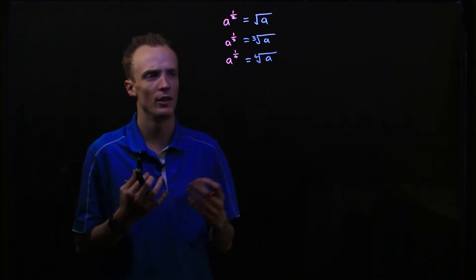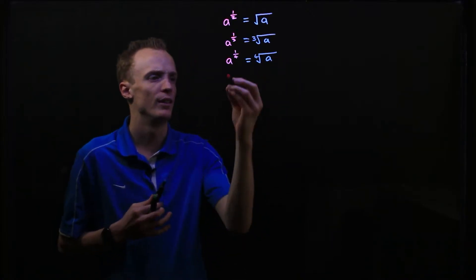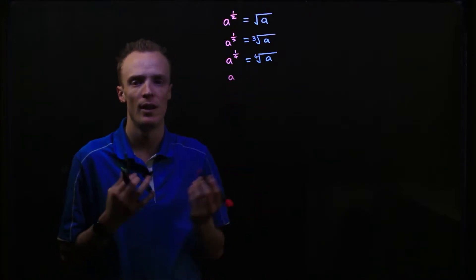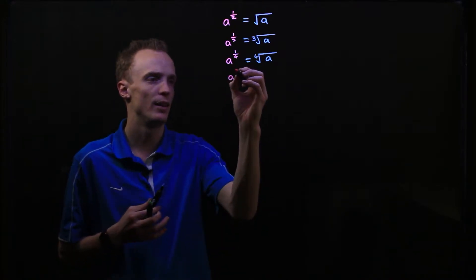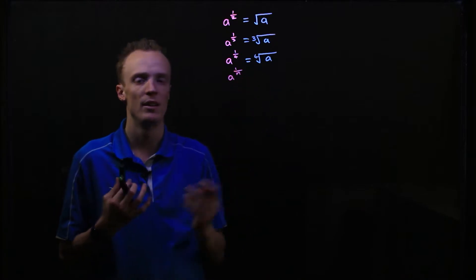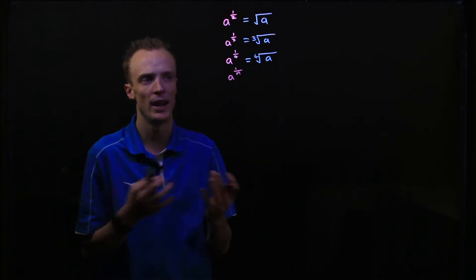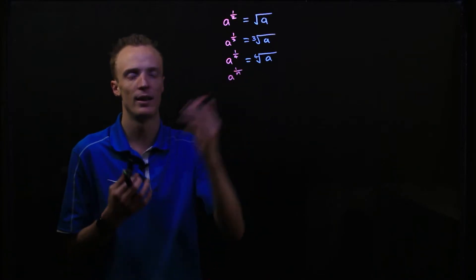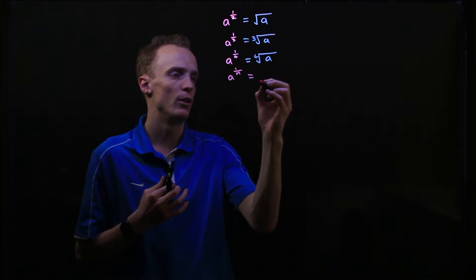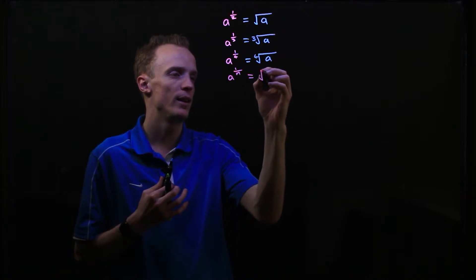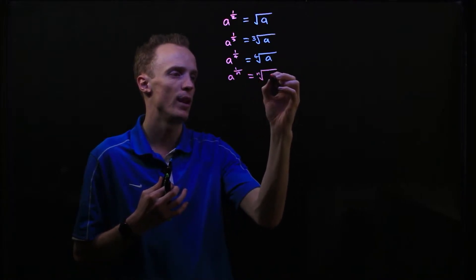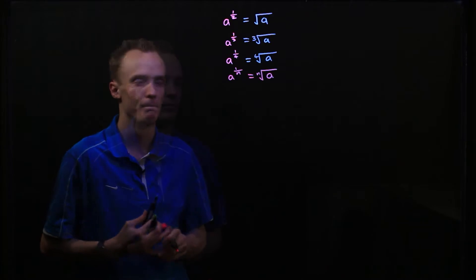So I can generalize this to say that if I've got a base value that has an index that is a fraction of 1 over n — n just being any number as our denominator — what this is the equivalent of is finding the nth root of our base value a.